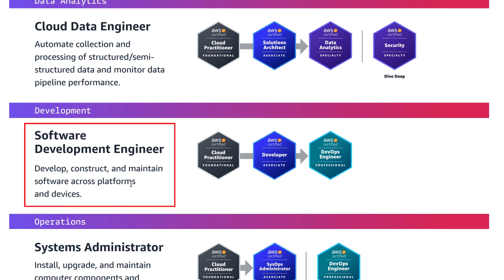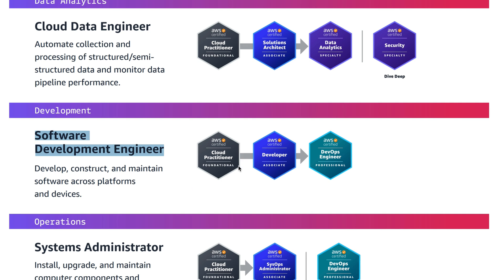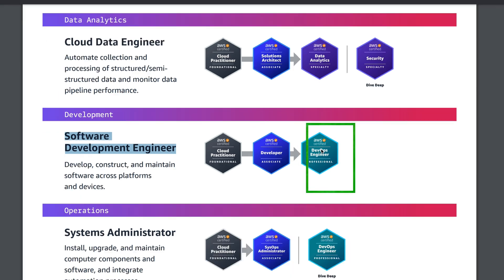For the development path, there is the Software Development Engineer role. The roles and responsibilities involve developing, constructing, and maintaining software across platforms and devices. Those who want to become a software development engineer need to earn the Cloud Practitioner foundational certification, then go with Developer Associate, and finally DevOps Engineer Professional.